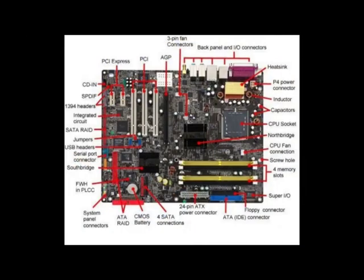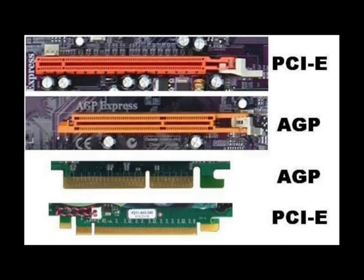IPP makes multiple requests for data during a bus or memory access, while PCI makes one request and does not make another until the data it requested has been transferred. IPP doesn't share bandwidth with other devices, whereas the PCI bus does share bandwidth.